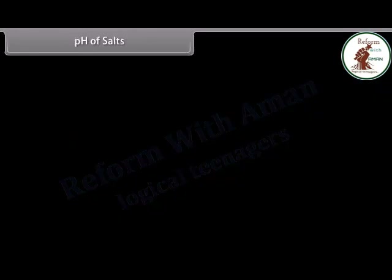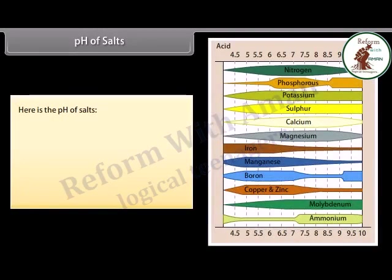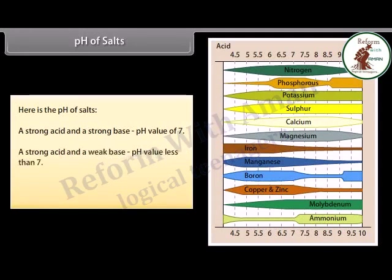pH of salts: a strong acid and a strong base produce a salt with a pH value of 7. A strong acid and a weak base produce a salt with a pH value less than 7. A strong base and a weak acid produce a salt with a pH value more than 7.